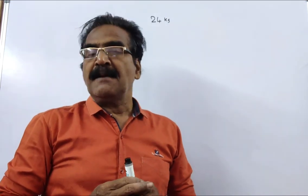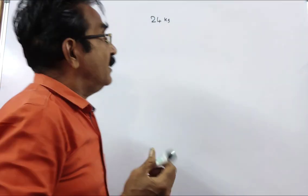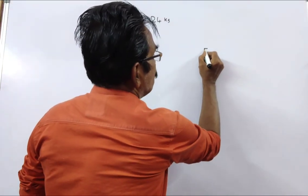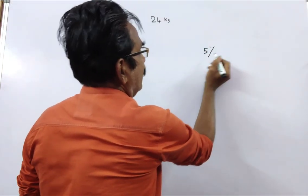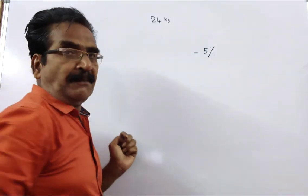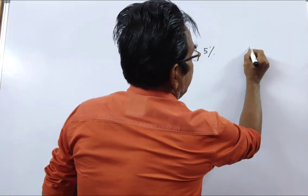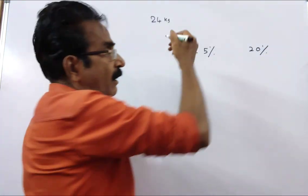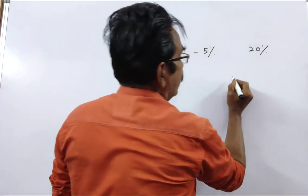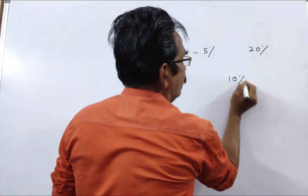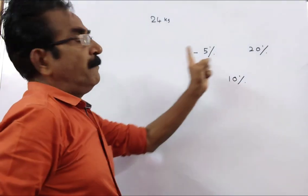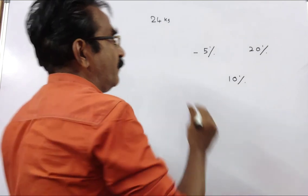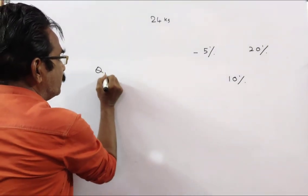This problem can be solved by applying the rule of allegation. By the rule of allegation, part of which is sold at 5% loss — loss means you have to put a minus sign — and the remaining at a profit of 20%, on the whole he gets a profit of 10%. By applying the rule of allegation, we get the quantities ratio.